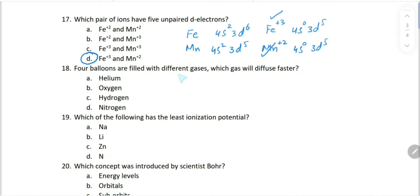Four balloons are filled with different gases, which gas will diffuse faster? According to Graham's law of diffusion, lighter gas will diffuse faster. Helium - one mole is 4 grams. One mole of oxygen gas is 32 grams. One mole of hydrogen gas is 2 grams. And one mole of nitrogen gas is 28 grams. So the lightest gas is hydrogen. Hydrogen will diffuse faster.